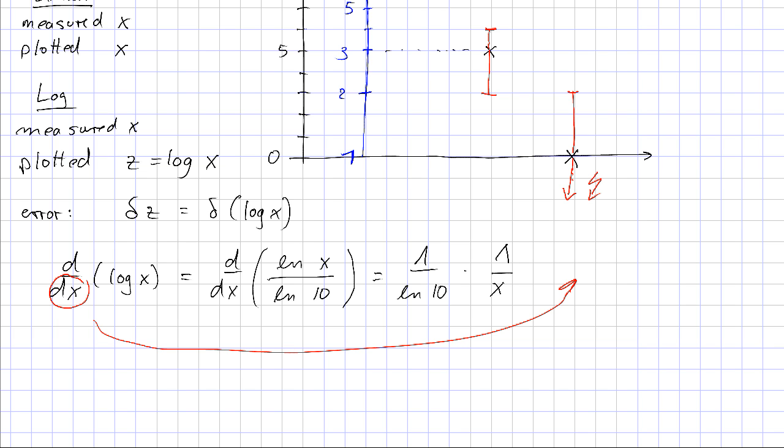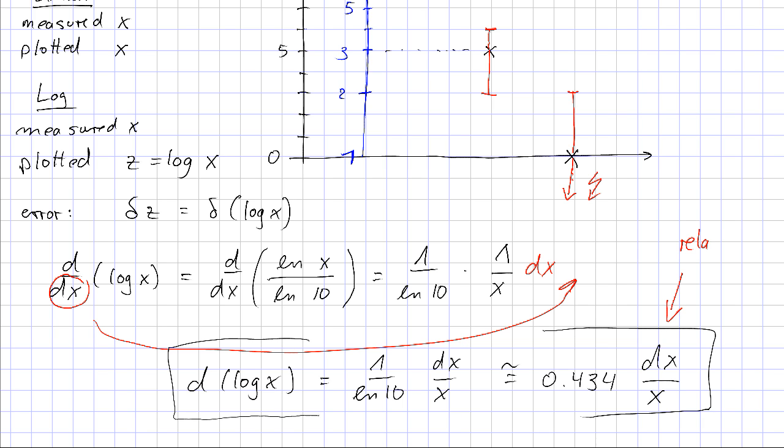So that means we end up with d log x is 1 over ln 10, dx over x. And numerically you can see this is approximately 0.434 dx over x. And dx over x, this is the relative error, which apart from this constant prefactor is what we should plot as dc.